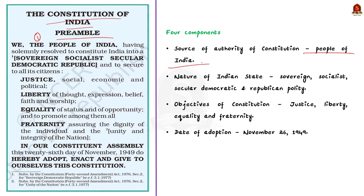Secondly, it reveals the nature of the Indian state. It states that India is a sovereign, socialist, secular, democratic republic. Here, you have to know one important fact — while adopting the Indian constitution, only three characteristics were mentioned in the preamble. Subsequently, by the 42nd constitutional amendment, two more characteristics were included: socialist and secular. Now, coming to the objectives of the constitution — they are justice, liberty, equality and fraternity. This is what we are going to discuss elaborately in today's discussion.